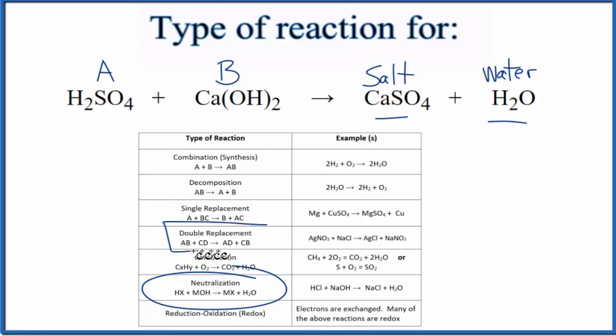It's also a double replacement reaction. That's where we have the hydrogen and the calcium switching places. So now I have HOH, that's H2O, and then I have calcium coming in here and joining with the sulfate. I get calcium sulfate. So we have the calcium and the hydrogen switching places, double replacement reaction.